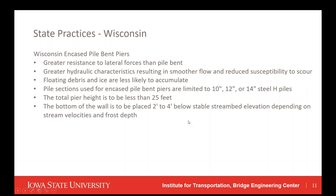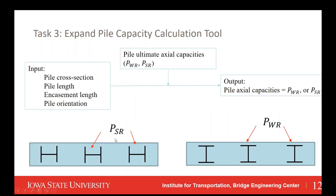Comparing to Wisconsin: encased pile-bent piers provide greater resistance to lateral forces than the pile-bent, better hydraulic characteristics resulting in smoother flow and reduced susceptibility to scour, and floating debris and ice are less likely to accumulate. Wisconsin limits pile sections in encased pile-bent piers to 10-inch, 12-inch, or 14-inch steel H-piles. Their total pier height is to be less than 25 feet, and the bottom of the wall is to be placed two to four feet below stable stream bed elevations, depending on stream velocities and frost depth. With that, I'm going to turn this over to Zheng Yu to describe in greater detail how we've expanded the pile capacity calculation tool.